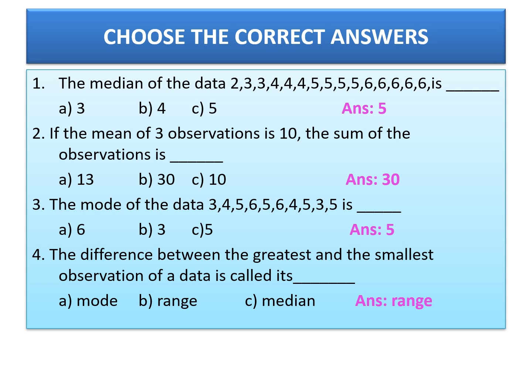Number 1: The median of the data 2, 3, 3, 4, 4, 4, 5, 5, 5, 5, 6, 6, 6 is dash. You know what is the median and how to find it out. The data is already arranged in ascending order, so we have to find out the middle number. How many total numbers are given? Let's count.